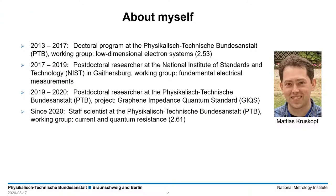A few words about my background. My name is Matthias Groskopf. I came to the PTB in 2013, where I started working in the group of low-dimensional electron systems as a PhD student. A few years later, as a postdoc, I worked at the NIST in the group of Randolph Elmquist, where I continued to work on graphene-based quantum Hall resistance standards. Then I got the opportunity to go back to the PTB, where I am now permanently employed in the group of current and quantum resistance of Hans-Jörg Scherer.